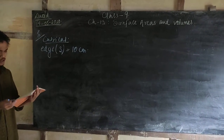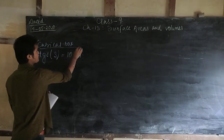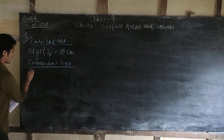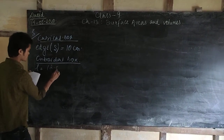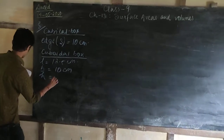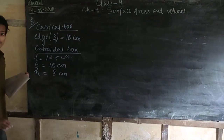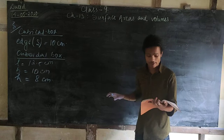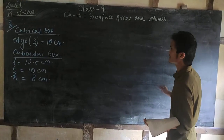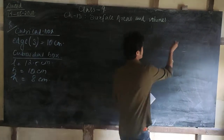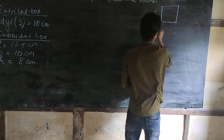And there is another cuboidal box: its length is 12.5 centimeters, breadth is 10 centimeters, and height is 8 centimeters. Dear students, remember — whenever you do such sums, you must draw the figure of the shape involved. Here we are talking about a cuboidal box and a cubical box, so draw one cuboid and one cube alongside the sum. Let us draw them.